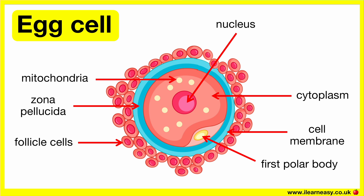The cell membrane changes after fertilisation by a single sperm, so that no more sperm can enter. The mitochondria provides the energy needed for cell processes, including fertilisation and early development.